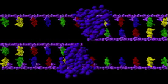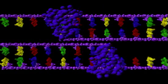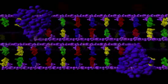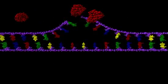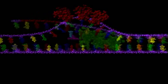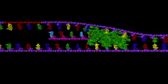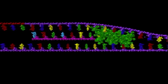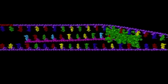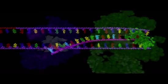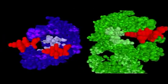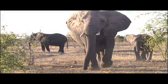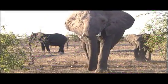Having seen how DNA replicates itself and how mutations occur, we now look at how the genetic information contained in an individual's DNA is converted to the proteins that make living organisms what they are.